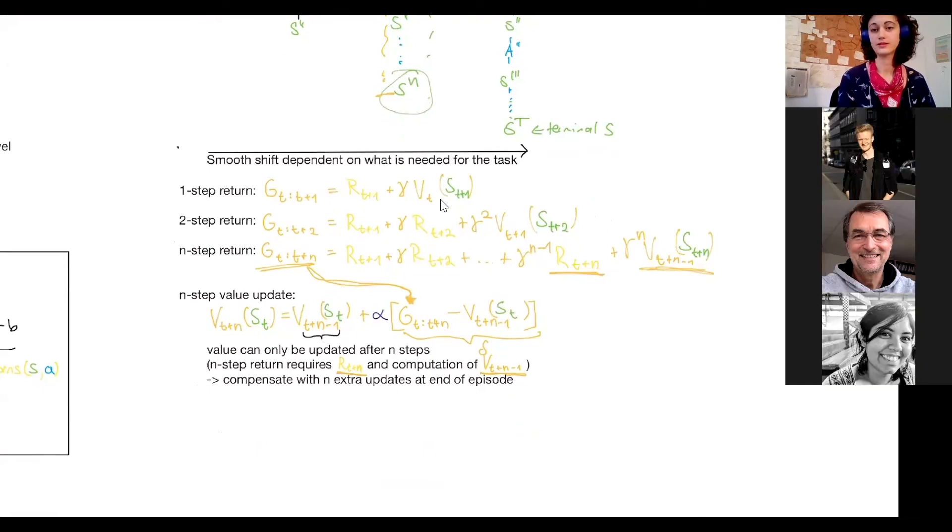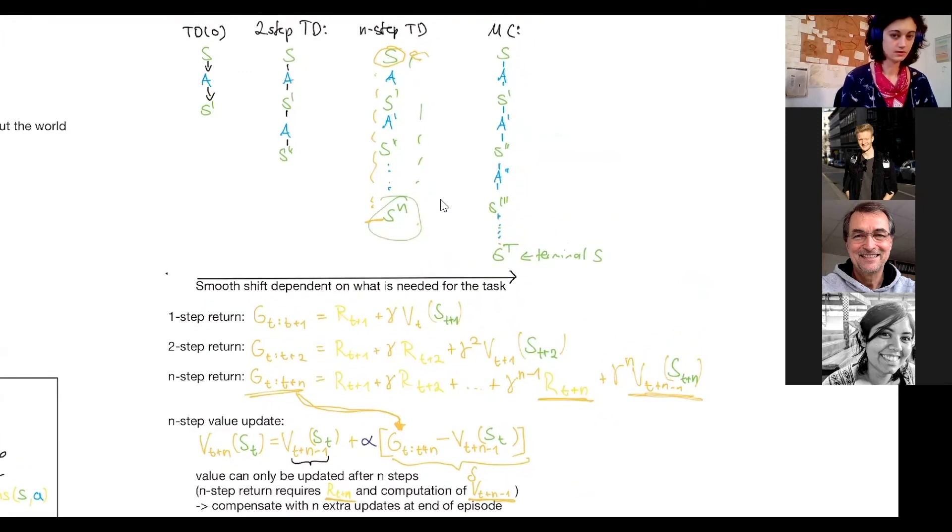Can I ask one quick question? Yeah. Couldn't I already start after one step to start updating? Because if I just leave out sort of the n following step after the first step and start updating, isn't that possible as well? After the first step, you could only calculate the one-step return, because you only have r_t+1, but you can't calculate the n-step return, where you need all these future returns up until t plus n. So it can't calculate for the n-step, but I could move to n and then update all the others beforehand. Yeah, exactly. So you could do a one-step update after one step, but you couldn't do an n-step update. Thank you.